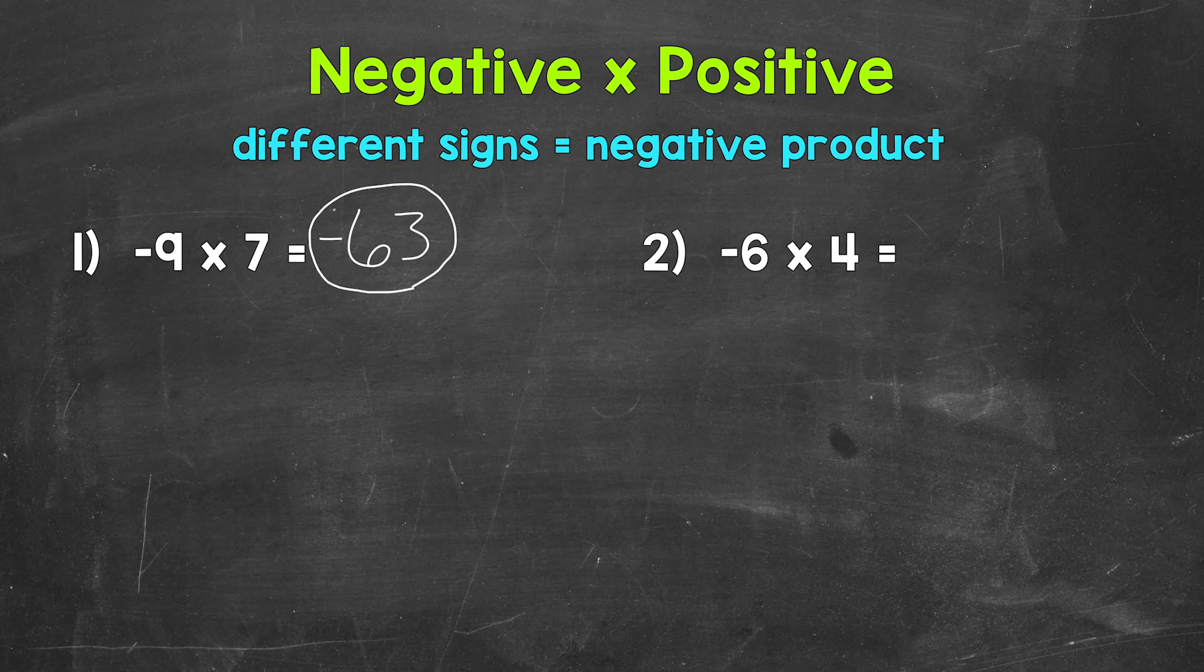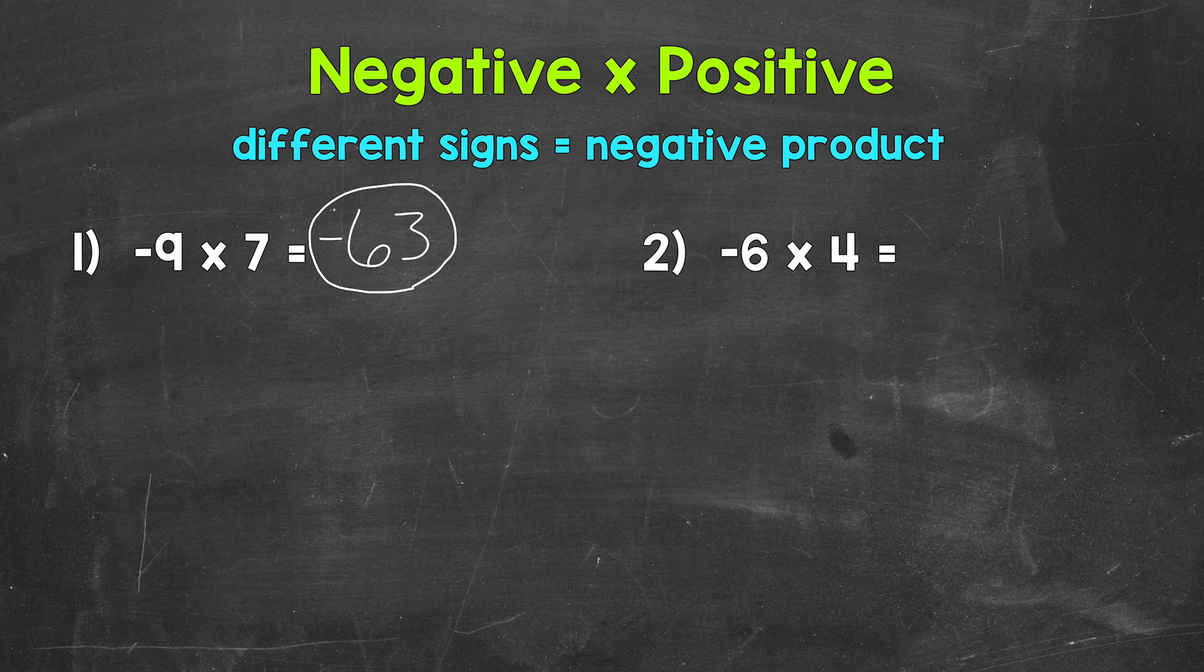One way to think of this is to think of negative 9 groups of 7. And we can think of negative groups as taking away groups. So taking away 9 groups of 7, that gives us negative 63.